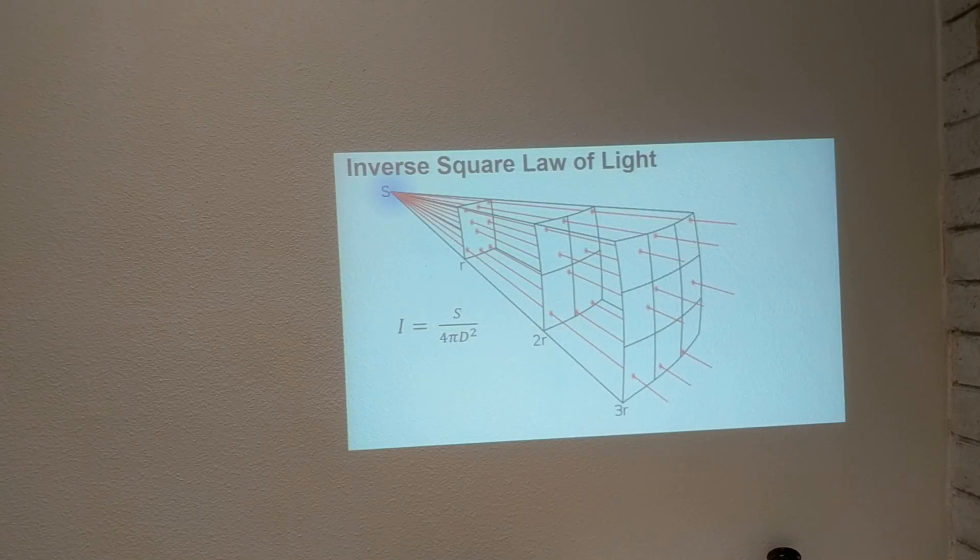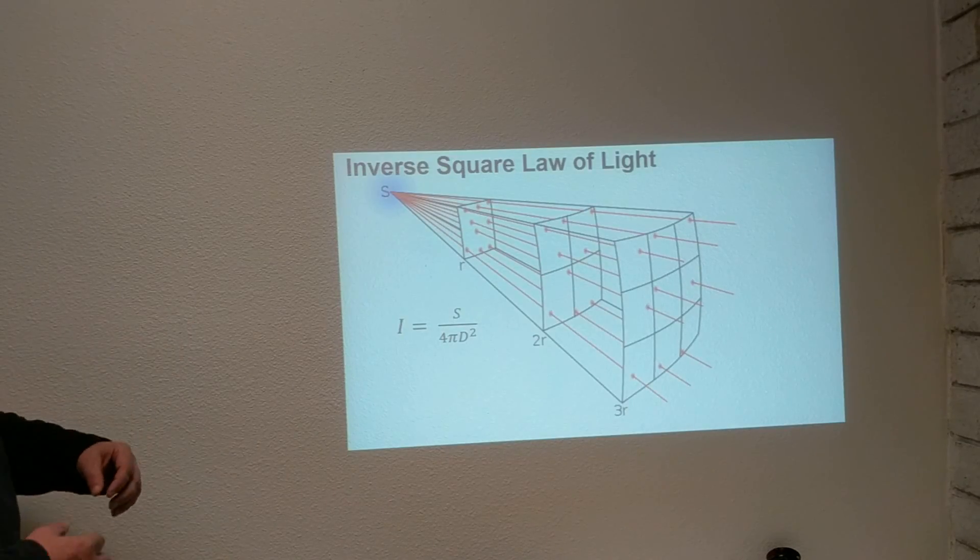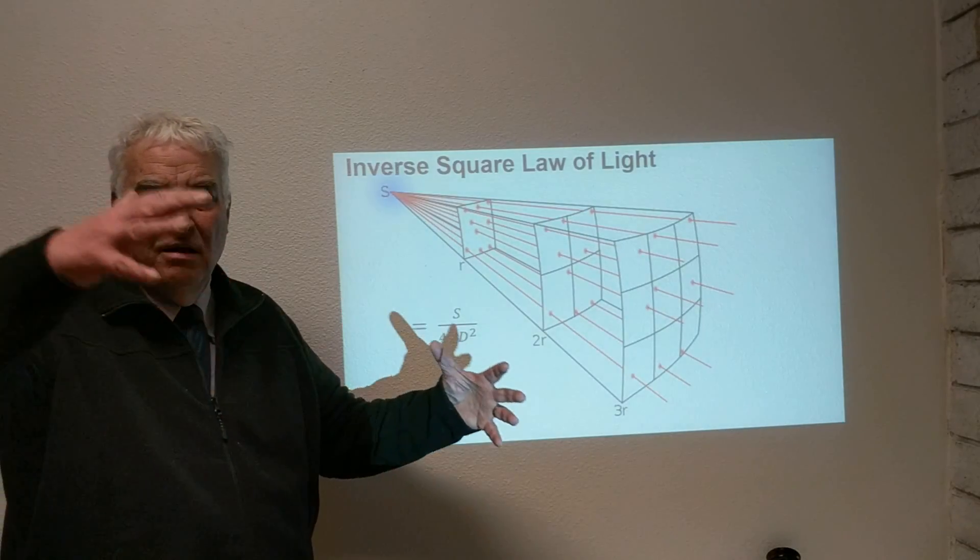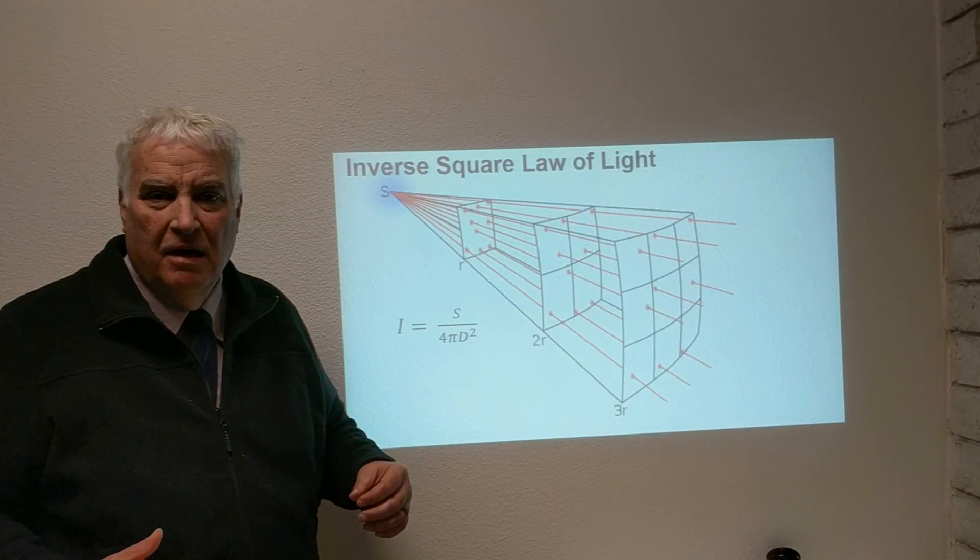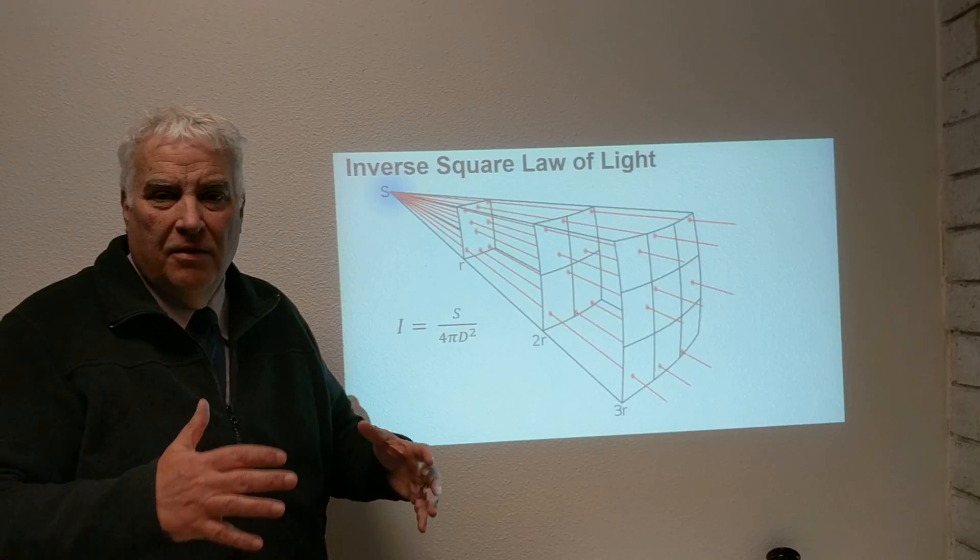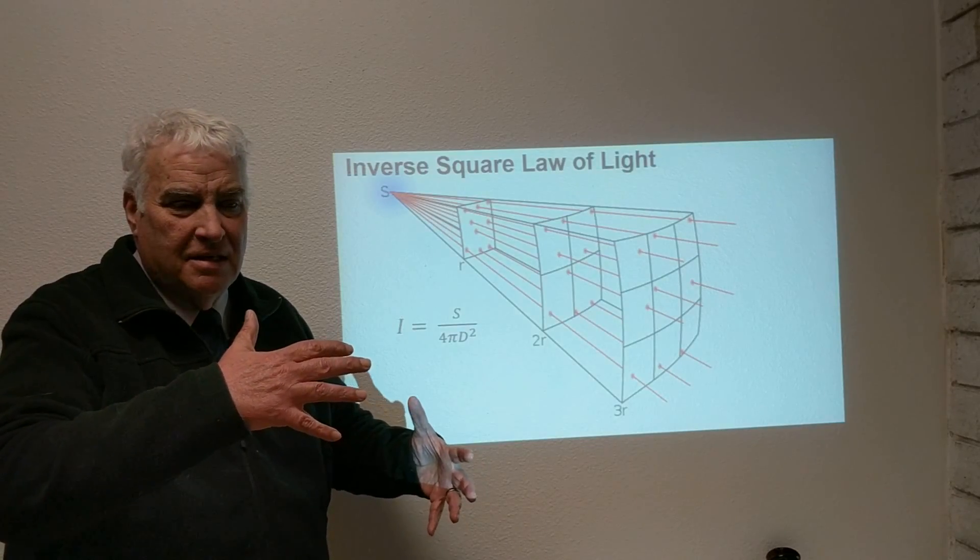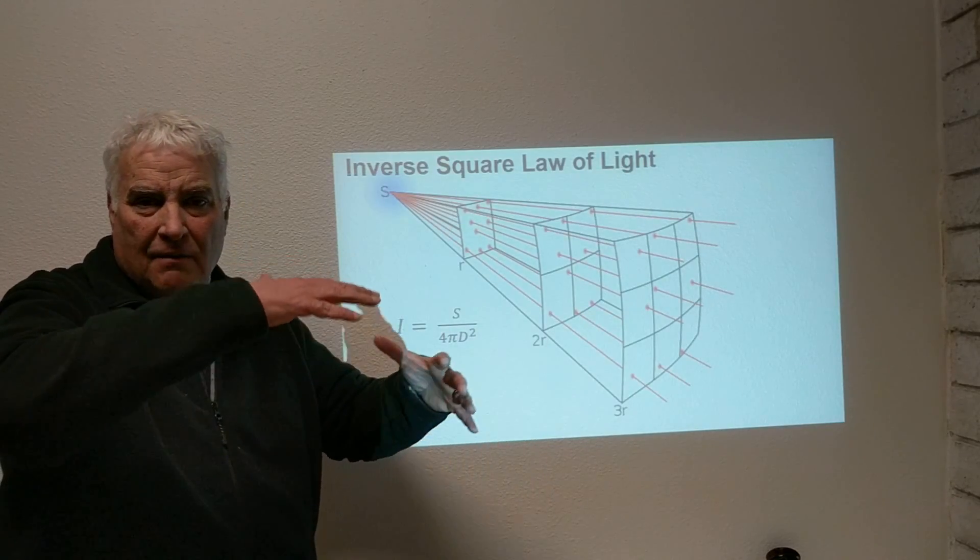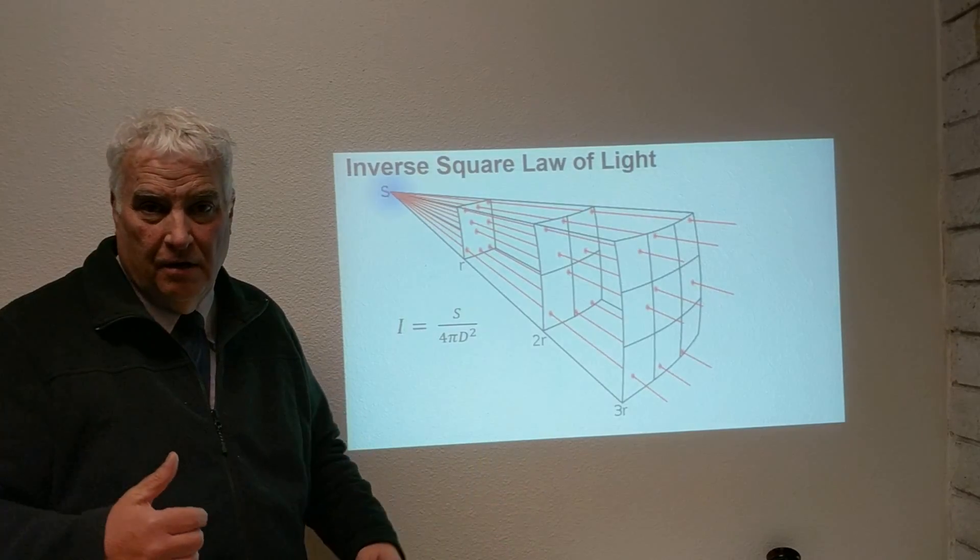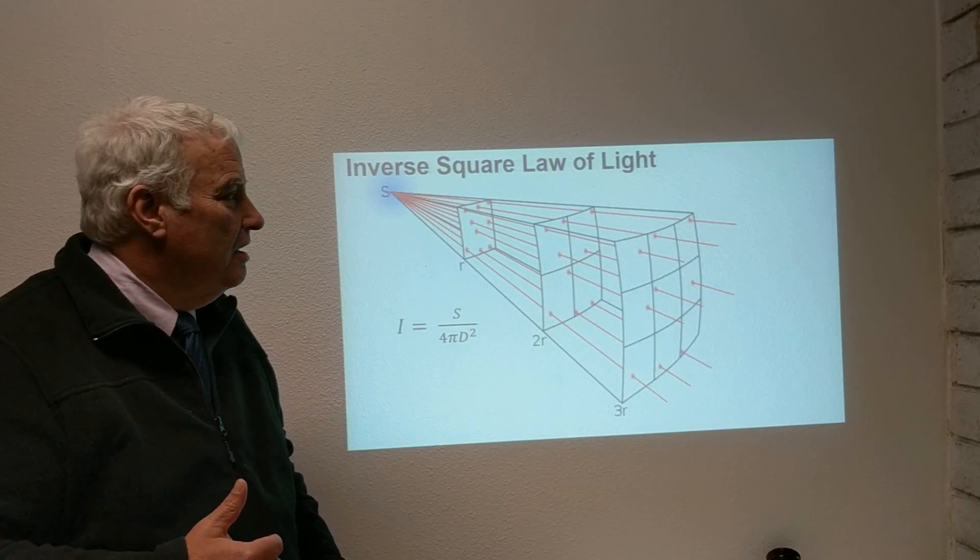Now, if we want to think about what happens when light travels away from a source, we can look at a diagram like this. If we see a source of light traveling away in all directions in three-dimensional space, we need to consider the idea that as the light travels, it travels along a surface of a sphere.